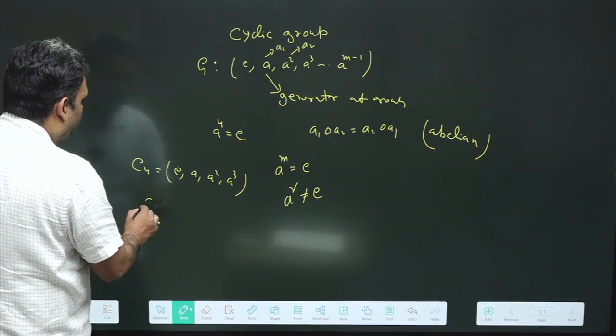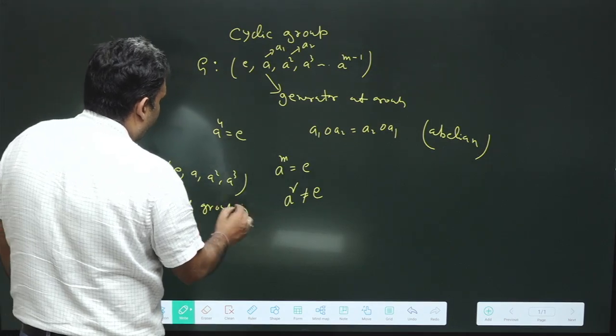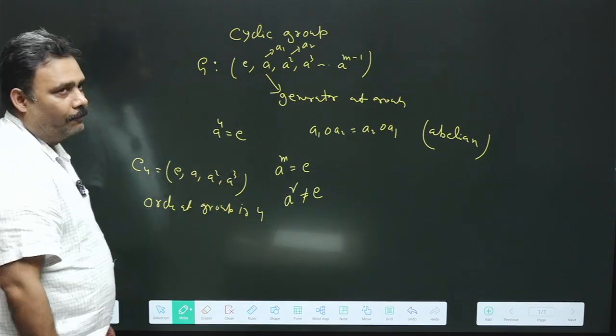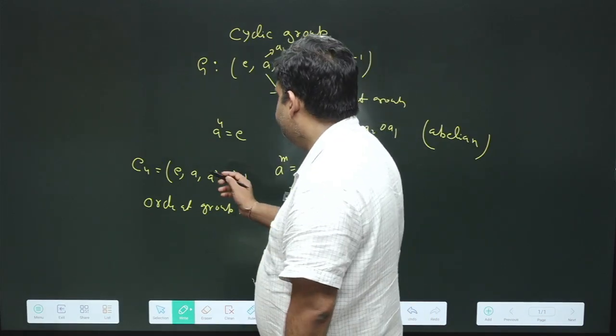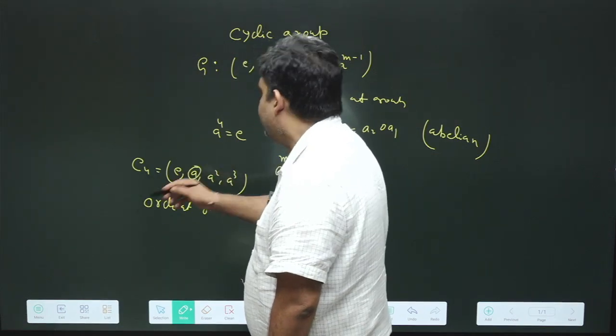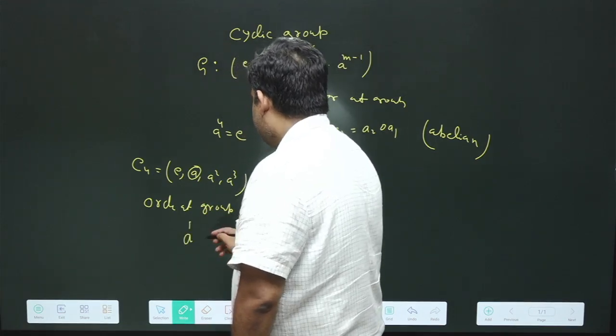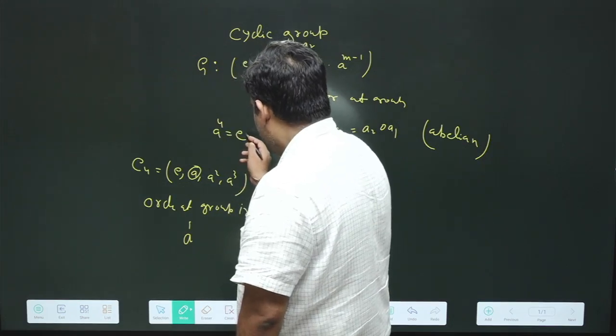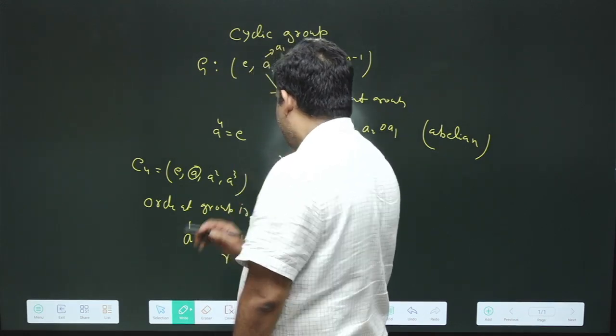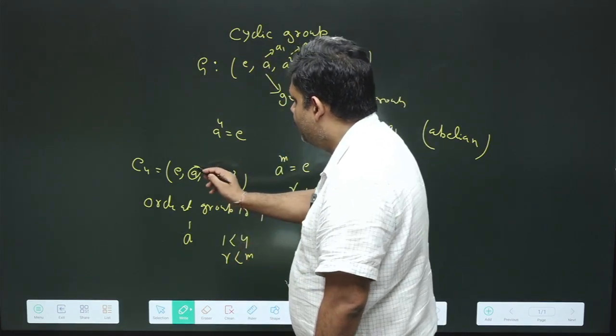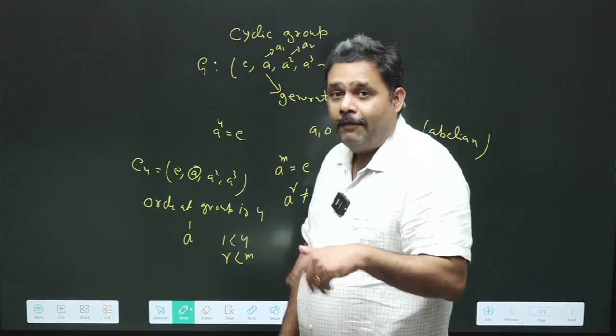What is the order of the group? Order of the group is basically four because we have four elements. And if we want to say what is the order of this particular element A, then we have A to the power one, and A to the power four equals E. That means R is less than M. The order of this one is one, order of this is two, order of this is three.